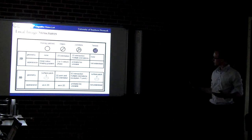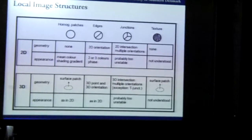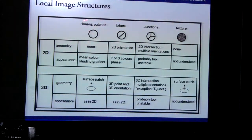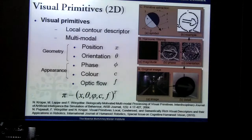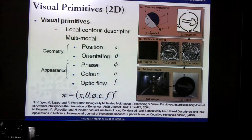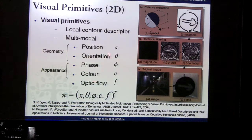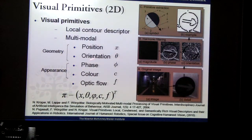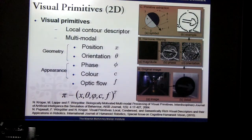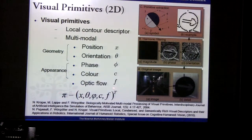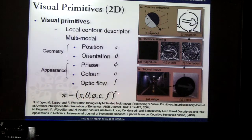This is an overview of the features we envision as a complete representation — though there may be more. We have homogeneous patches, edges, junctions, and texture. For a 2D line segment, computable from just a 2D image after filtering, we store: a position in the 2D image, an orientation angle, the phase — which is the transition going from one color to another — the color on each side of the line or edge, and some information on optical flow.